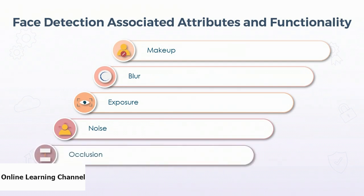Finally, the face service can detect if there are any objects obstructing parts of the face. A common reason is hair hanging over someone's face, but it could also be someone in a shadow or behind a post. These occlusions can be detected, and each part of the face that's obstructed is included in a Boolean output.